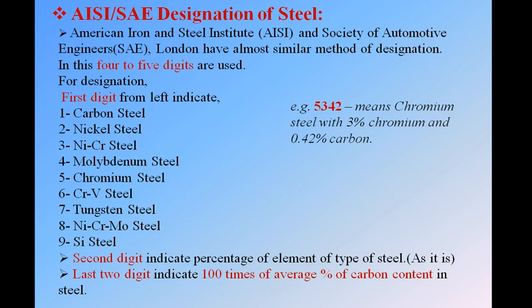The last point is AISI — American Iron and Steel Institute — and SAE — Society of Automotive Engineers — designation of steel. These two standards have almost similar methods of designation. They use four to five digits with no alphabets — unlike Indian standards which use alphabets like Fe, C, Cr, Mo. In AISI and SAE, only numbers are used for designation.